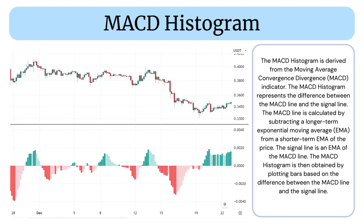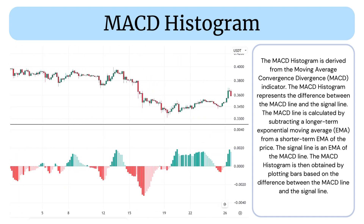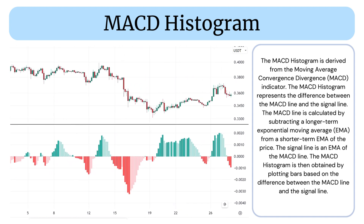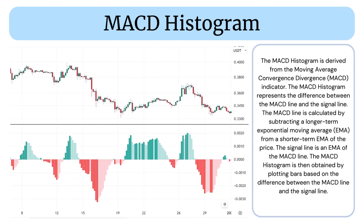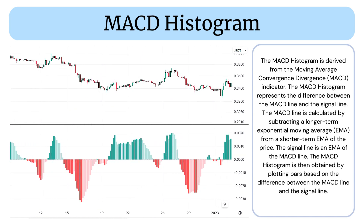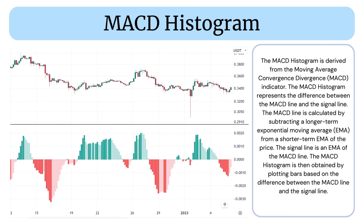The signal line is an EMA of the MCD line. The MCD Histogram is then obtained by plotting bars based on the difference between the MCD line and the signal line.